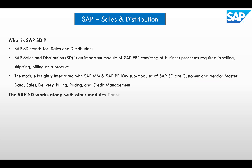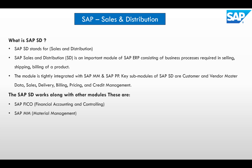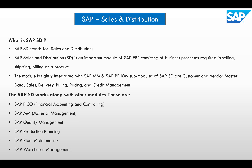SAP SD works along with other modules: SAP Finance and Controlling for financial activities, SAP MM for procurement, Quality Management to check the quality of a product before shipping it to the customer, Production Planning to check the availability of material before confirming a sales order, Plant Maintenance, and Warehouse Management — all to handle the complete sales and distribution process.